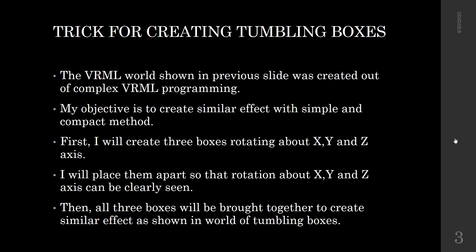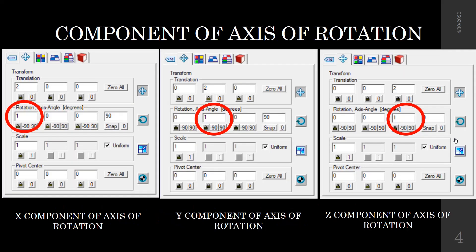First, I will create three boxes rotating about the X, Y and Z axes. I will place them apart so that the rotation about each axis can be clearly seen. Then all three boxes will be brought together to create a similar effect as shown in the world of tumbling boxes. This will be our methodology.